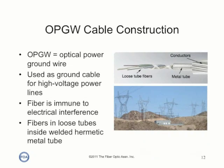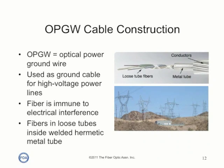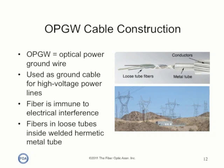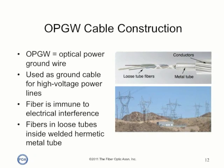OPGW stands for Optical Power Ground Wire. It is a cable used as the ground for high voltage transmission lines, made possible by fiber's immunity to electrical interference. The fibers are inside plastic loose tubes, which are then covered by a welded hermetic metal tube, covered then again by electrical conductors that are also the strength members.